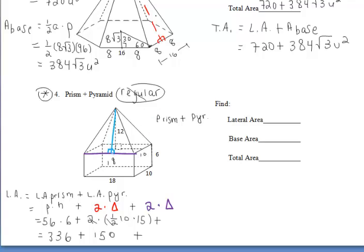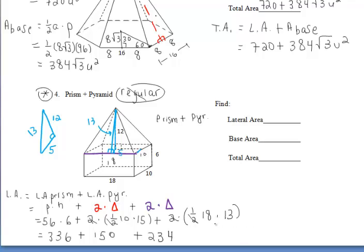For the purple triangles, the base is 18 and we need the slant height, which I'm drawing in blue. One leg of the right triangle is the pyramid's altitude of 12, and the other leg is half of the 10-unit side, which is 5, since the altitude hits at the center of the base. So we have a 5-12-13 family, making the slant height 13. The area of both purple triangles is 2 times one-half times 18 times 13, which reduces to 234 units squared.